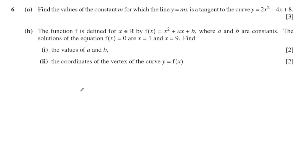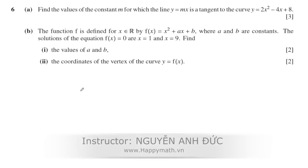This question is about the function. For question a, find the values of the constant m for which the line y equals m is tangent to the curve y equals 2x squared minus 4x plus h.